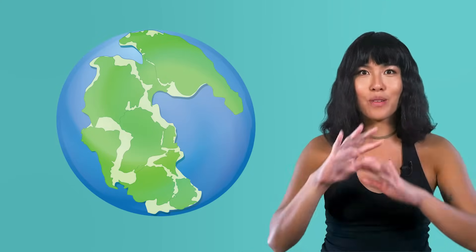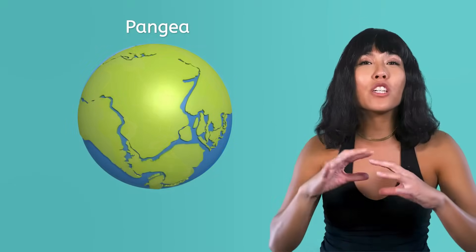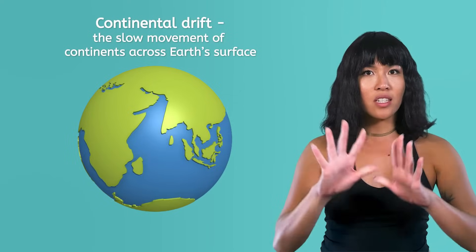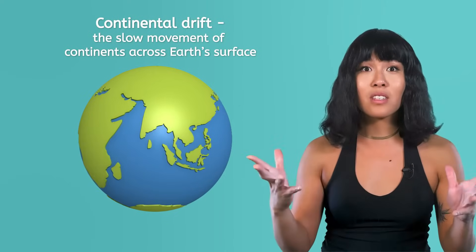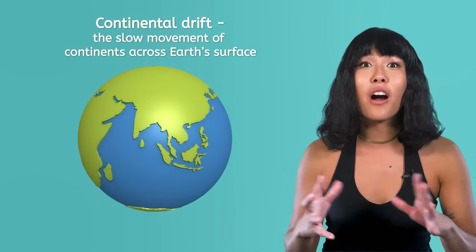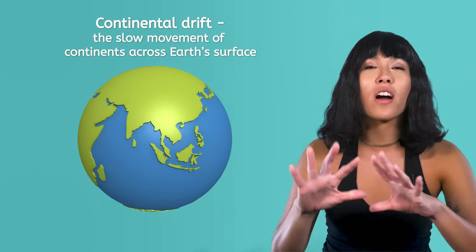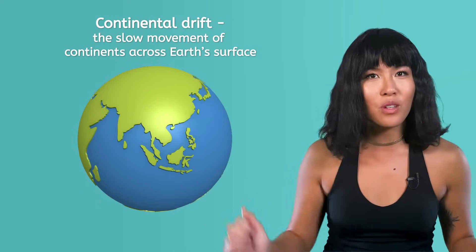He believed that the Earth used to just have one supercontinent called Pangea that slowly drifted apart into the seven continents we know today. Alfred called the theory continental drift, or the slow movement of continents across Earth's surface.